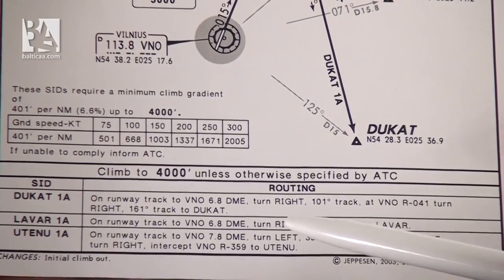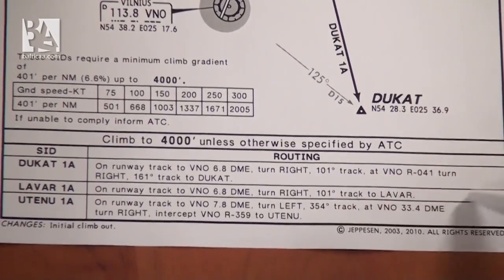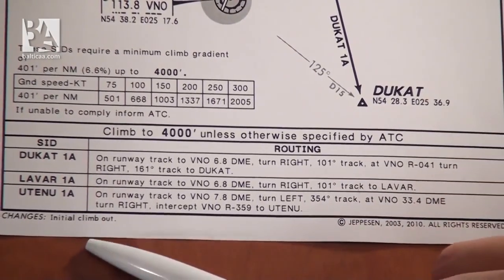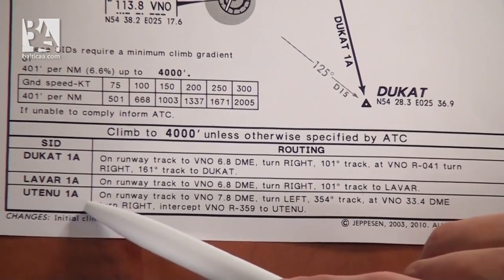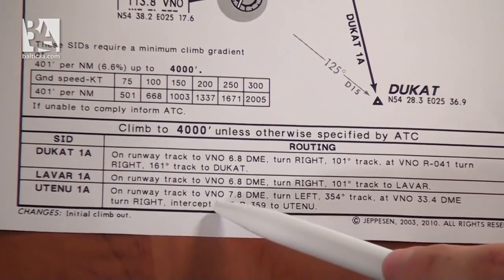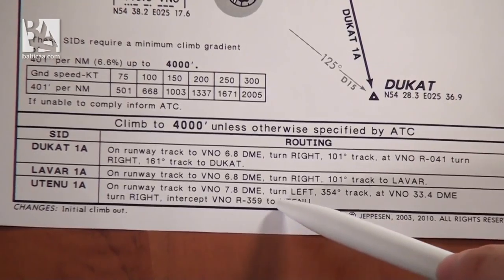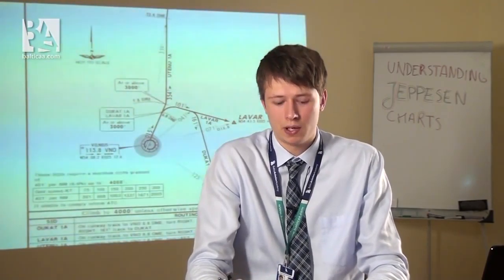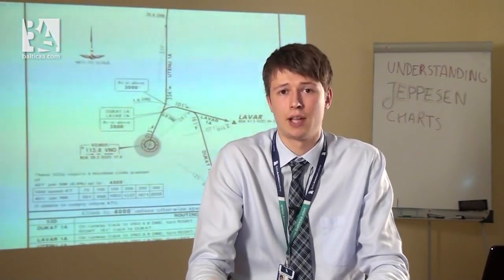Below that we can see the general summary of the routing for the standard instrument departures. We were looking at Uten 1-Alpha, and we can see the same information: on runway track continuing to VNO 7.8 DME, turn left, and so on. This wouldn't be much different from any other standard instrument departure chart you might find — except maybe the number of departures, the directions, the number of runways would be different. But the general information given is the same. Thank you very much for joining me in Understanding Jeppesen Charts, part 1. In the next part I will show you the approach charts and the landing charts.